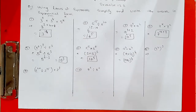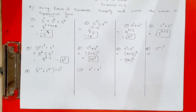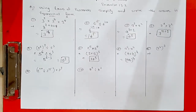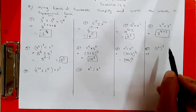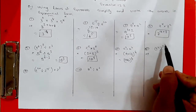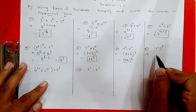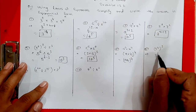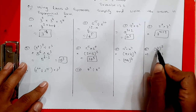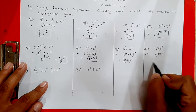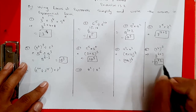Question 8: (3 raised to 4) raised to 3. Power of a power — multiply the powers: 4 times 3 equals 12, so the answer is 3 raised to 12.